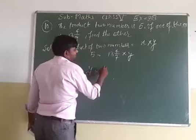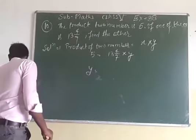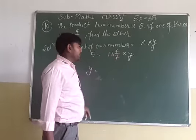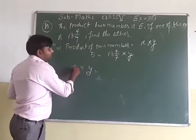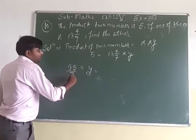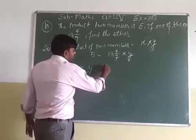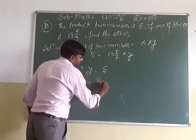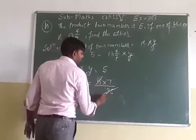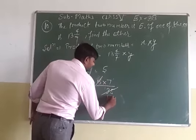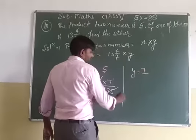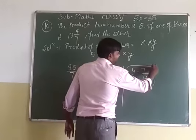So y equals — converting the mixed number: 7 multiplied by 13 is 91, add 4 gives 95 upon 7. So 95 upon 7 multiplied by y equals 5. Therefore y equals 5 multiplied by 7 upon 95. Simplifying 5 upon 5: y equals 7 upon 19. This is your answer. Thank you.